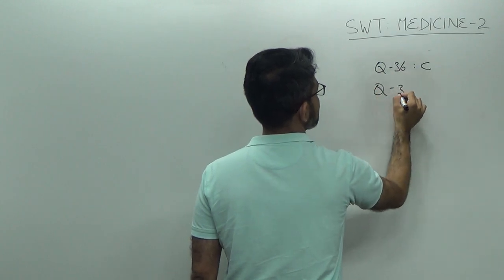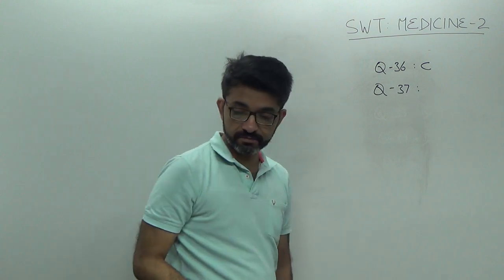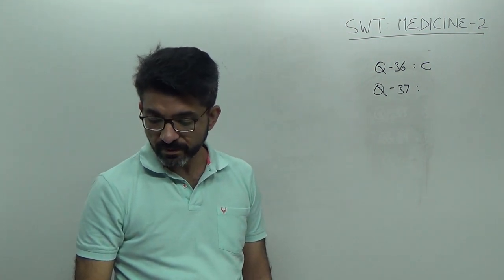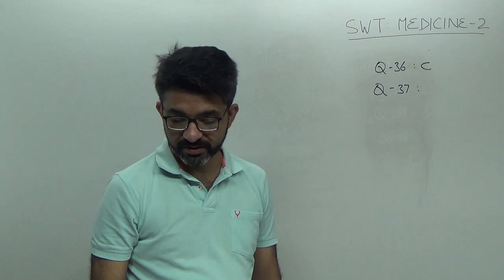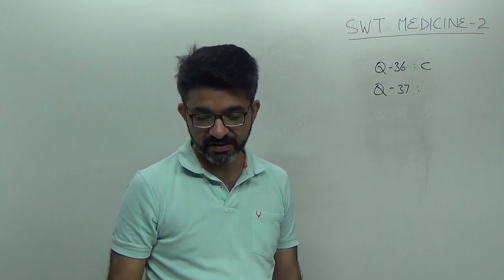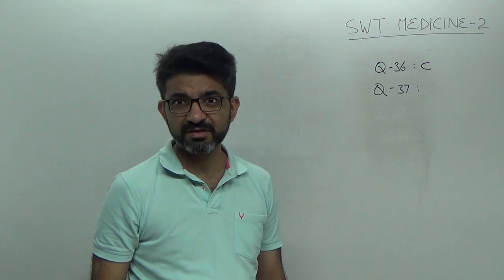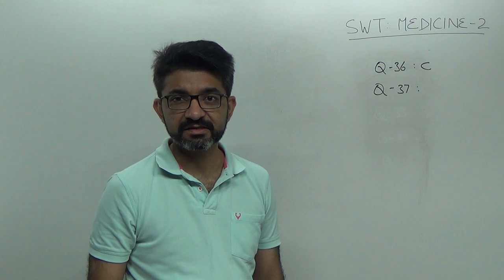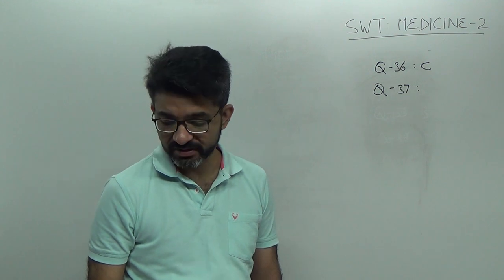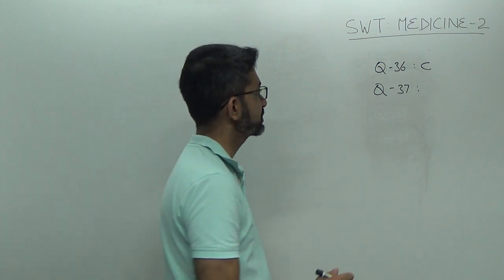Question number 37, which test is used to diagnose Dubin-Johnson syndrome? It is BSP test, BSP. Remember, Dubin-Johnson is an autosomal recessive disease. It is a benign disease. It never threatens the life of the patient. So, it is BSP test. The answer is B.